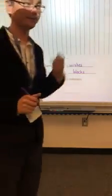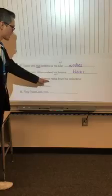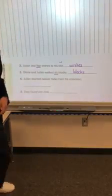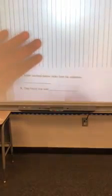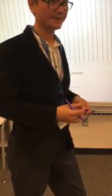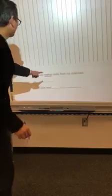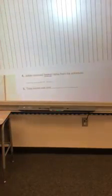You have a seat. So the last one, oh no, number four. Julian counted twelve rocks from his collection. Underline the adjective. Which one? Twelve. Twelve is a number. A number is special adjective telling more about how many of that noun. And the noun will be rocks. So we write rocks in here.